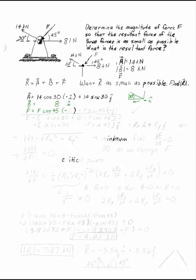Once you've drawn a picture, the third thing to do in solving an engineering problem is to write down what you're given. You have three forces. Vector A has a magnitude of 14 kN. Vector B has a magnitude of 8 kN. You have a vector F. We know that we want the resultant force of the three to be as small as possible.